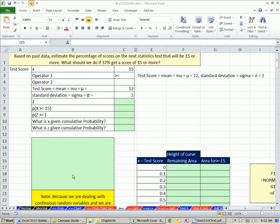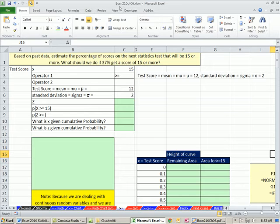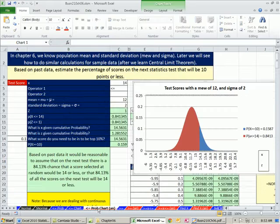Welcome to Excel 2010 statistics video number 59. If you want to download this workbook, business210chapter6.xlsm, click on the link below the video. In this video, we want to continue our discussion of the normal bell curve. Last video, we talked about how to create this chart and calculate probabilities below some x.